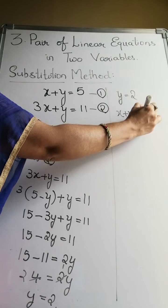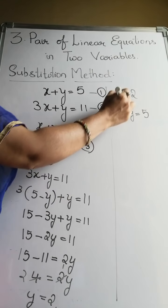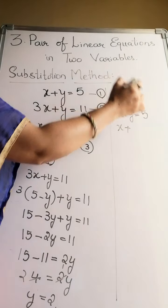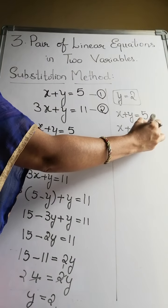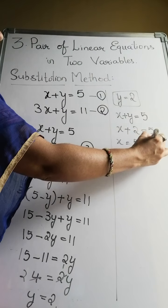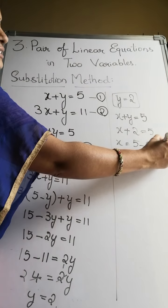x plus y equals 5. So x plus the value of y which we got as 2, we substitute here, equals 5. x equals 5 minus 2, that is 3.